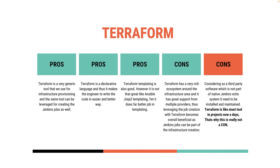Terraform templating is good but not as powerful as Ansible, though it can still do a decent job. It's a good option when you have decent jobs to create. Terraform has a very rich ecosystem with many providers. If you're already using Terraform to manage all your infrastructure, adding Jenkins jobs to it is a very good option. The con is it's third-party software, but if it's already part of your ecosystem, that's never a problem.